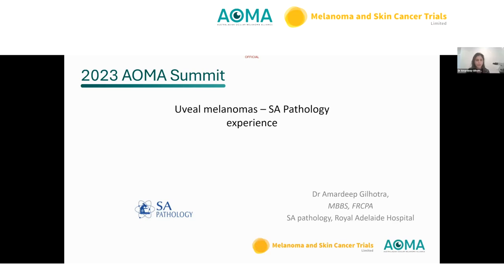Dr. Gilhotra now covers the pathology lab perspective. Small biopsies — FNA and vitrector flap biopsies — are received; these are generally of low yield and often not visible to the naked eye. In the past, samples were split for cytogenetics and immunohistochemistry. In more recent years, samples are submitted entirely for cytogenetic analysis because the diagnosis of melanoma is mostly based on clinical grounds — this approach ensures adequate cellularity for molecular assessment.